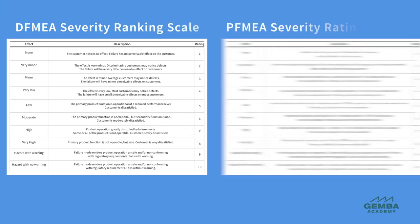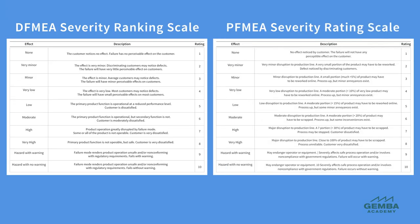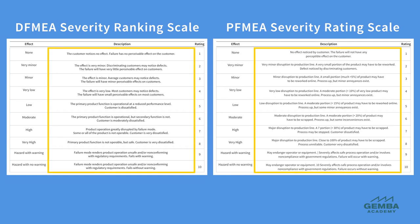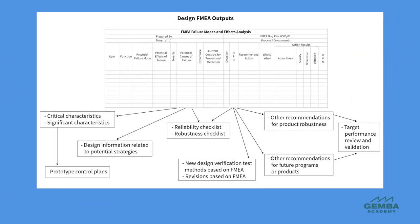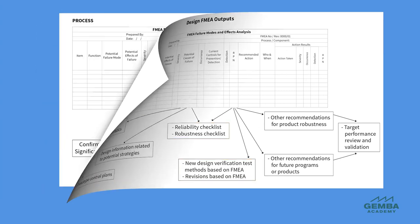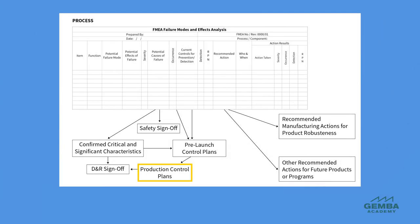Third, the ranking scales for severity, occurrence, and detection will follow the same principles but cover different content and will have different definitions. And fourth, the outputs between the two are different. For a design FMEA, these are typically a design verification plan, a robustness checklist, and a design sign-off report. The output of a process FMEA includes a revised or enhanced control plan or alternatively a dynamic control plan, part drawings showing the special characteristics, and actions to improve methods, materials, equipment, training, or the operating environment.